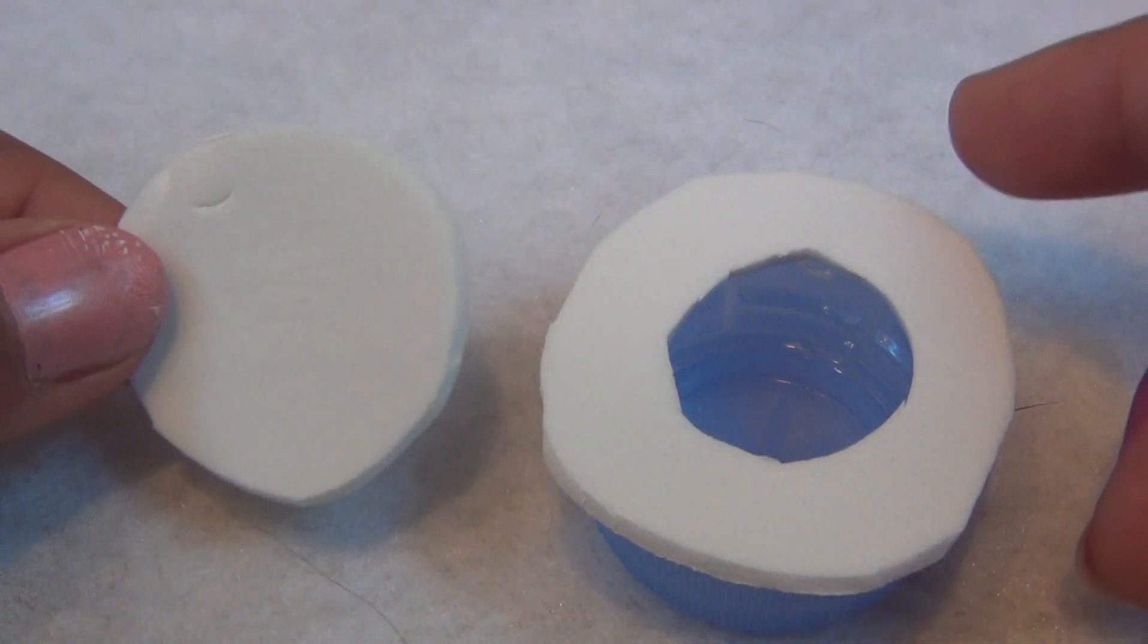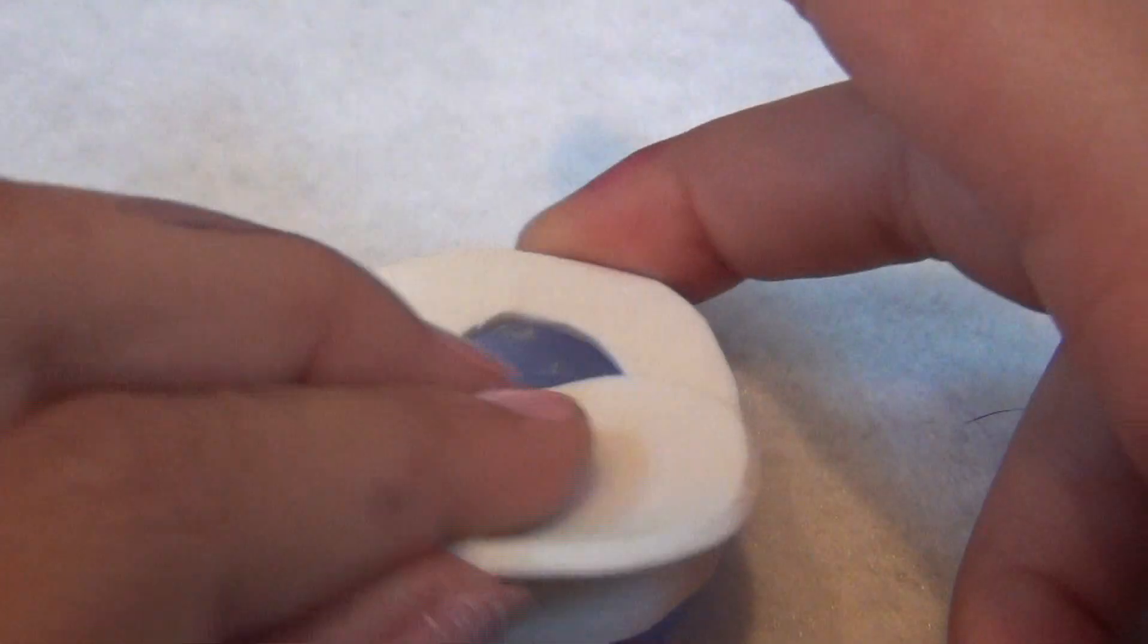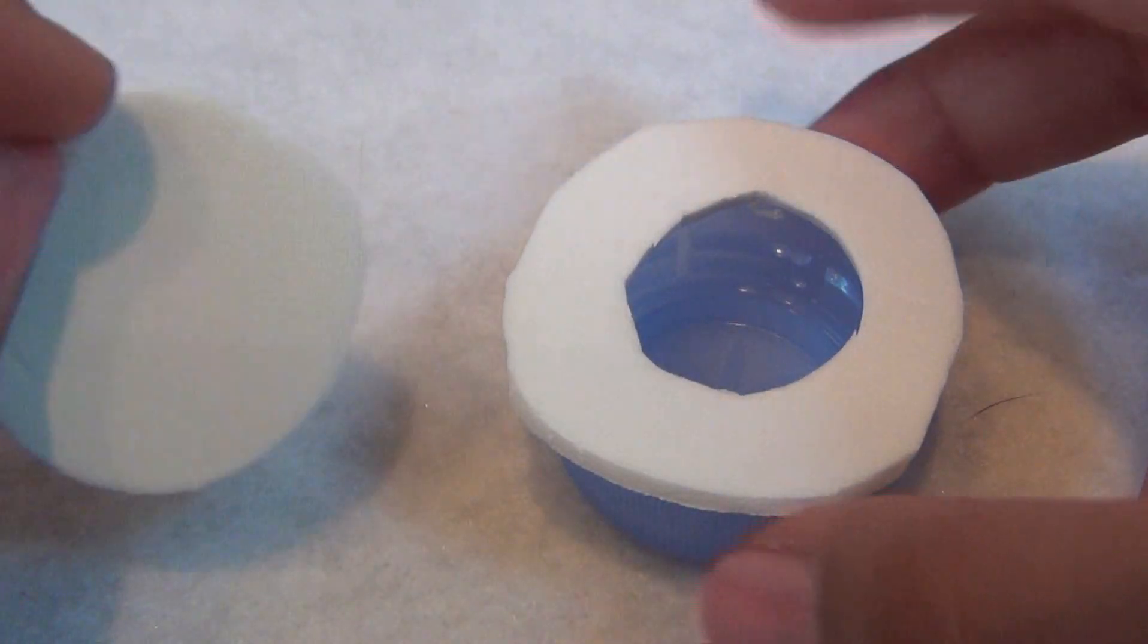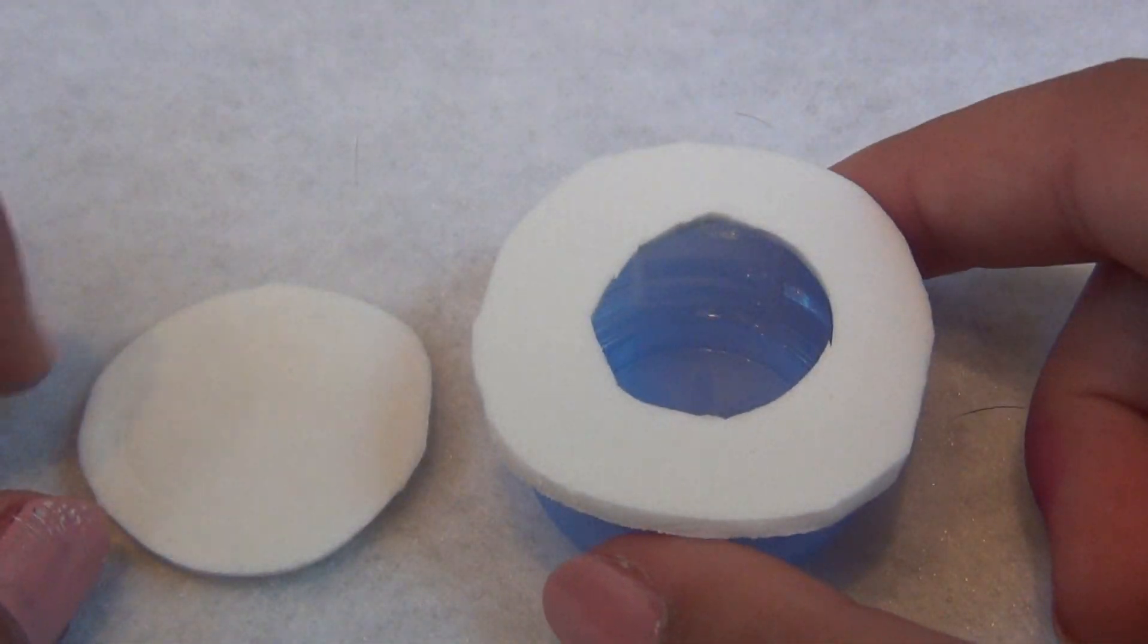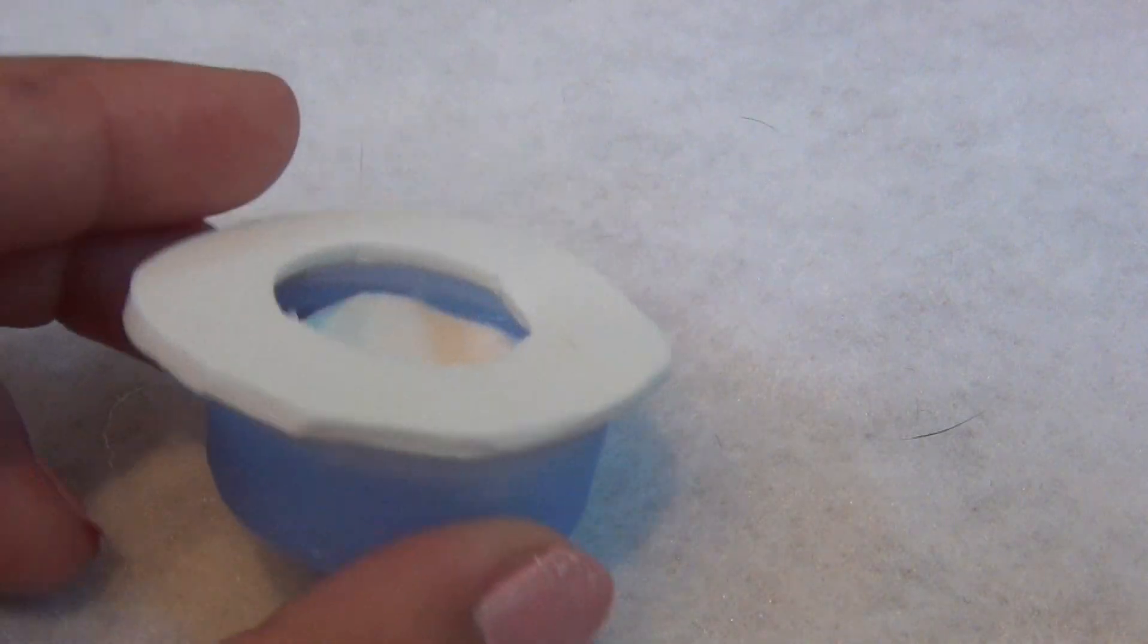Now you can push your second circle inside the toilet for the bottom. And you're actually supposed to do this before you glue the toilet seat on, but I kind of forgot, so I'm gonna do it now. Your toilet should be looking like this.